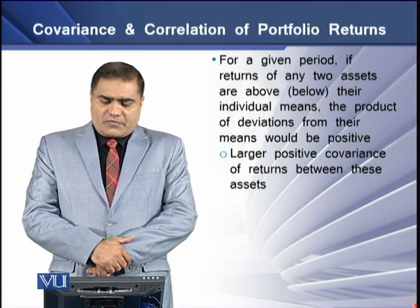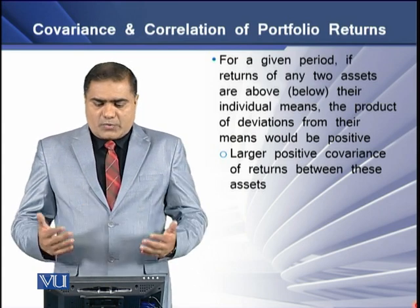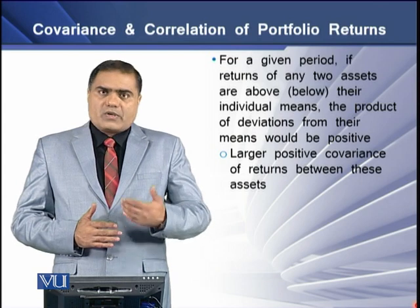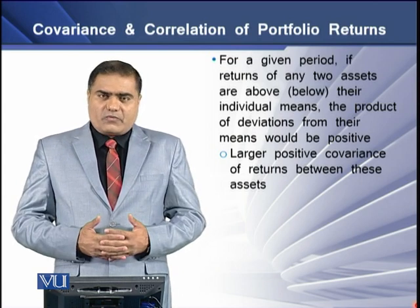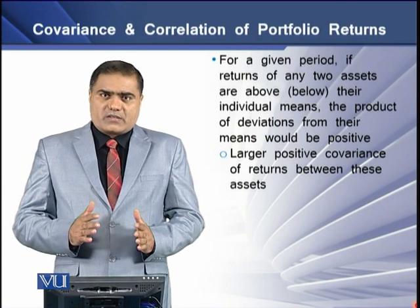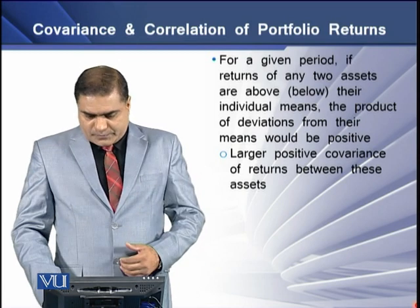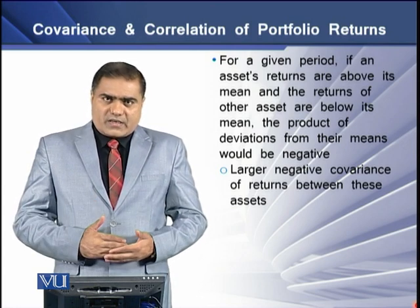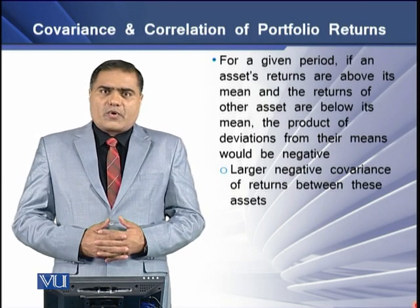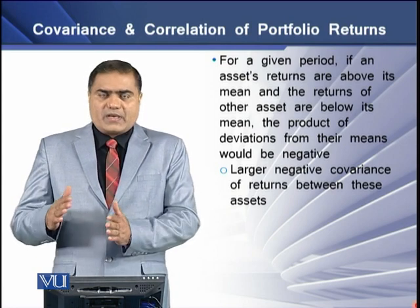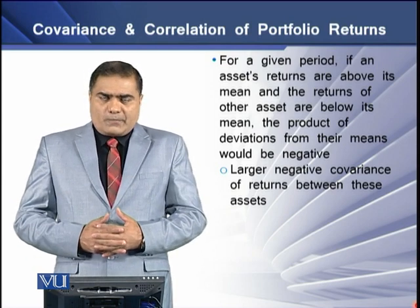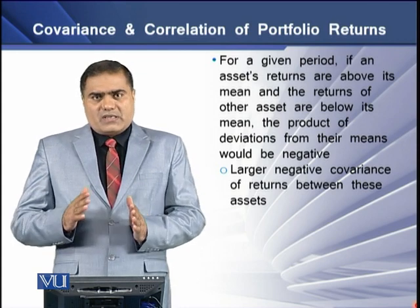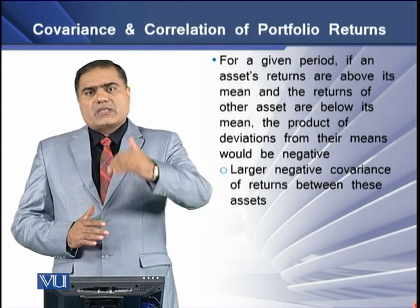For a given period of time, if the returns of any two assets are both above or both below their individual means, then the product of deviations from their individual means would be positive, resulting in a larger positive covariance between these assets over time. Similarly, if one asset's returns are above its mean while the other asset's returns are below its mean, the product of deviations would be negative, resulting in a larger negative covariance over that time period.